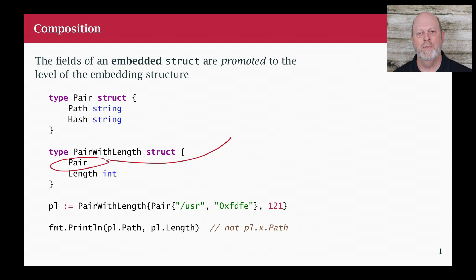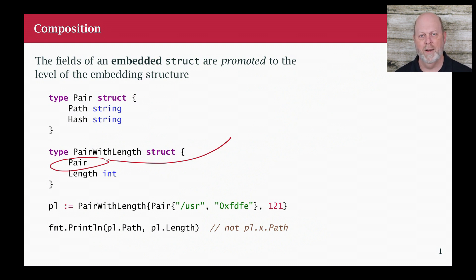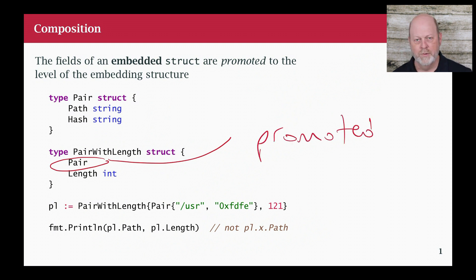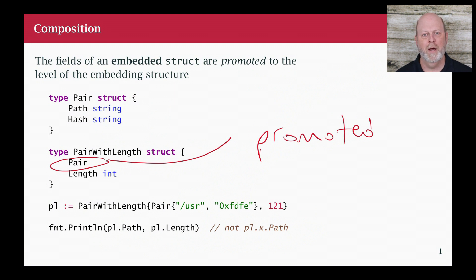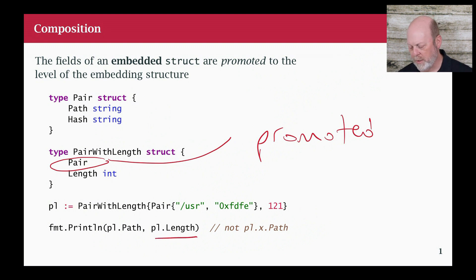What happens is that type becomes embedded inside pairWithLength. The simplest way of explaining this is to say that the fields of pair get promoted into pairWithLength. This word 'promoted' is really important because we're going to see other things get promoted also. Promotion means that the fields of pair appear at the same level as the fields of pairWithLength. So I can access PL.length — PL is a pairWithLength object.